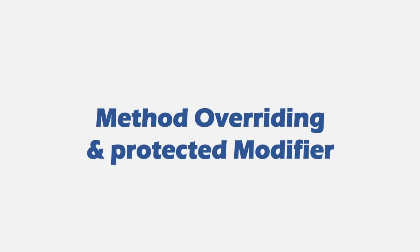We learned what inheritance is and how to implement it in TypeScript in our last lecture. Now let's talk about some other useful concepts related to inheritance, like property and method overriding, and also about the protected access modifier. We talked about public and private access modifiers — in this lecture, we will also talk about the protected access modifier. Let's go to VS Code.